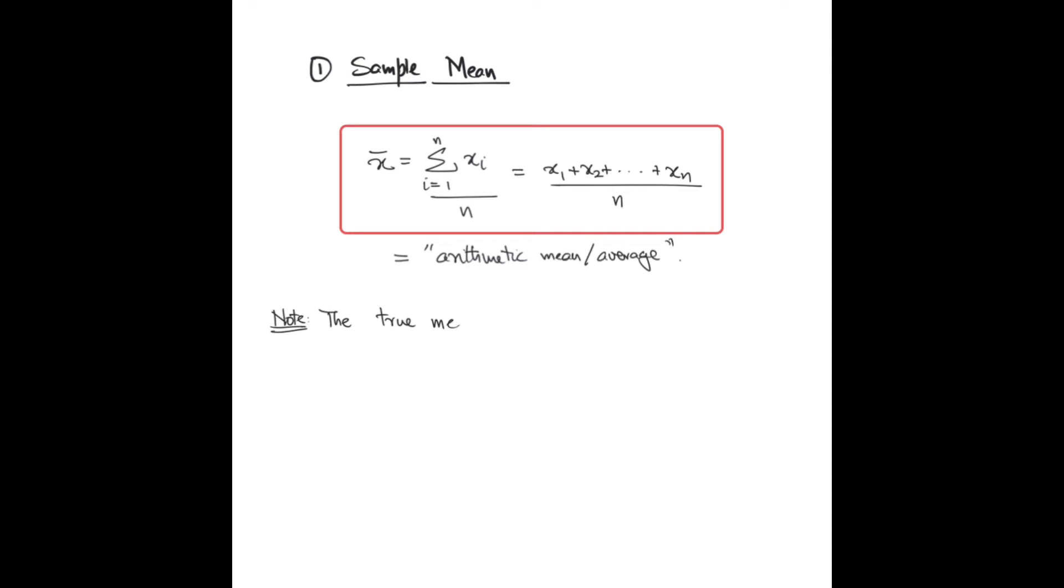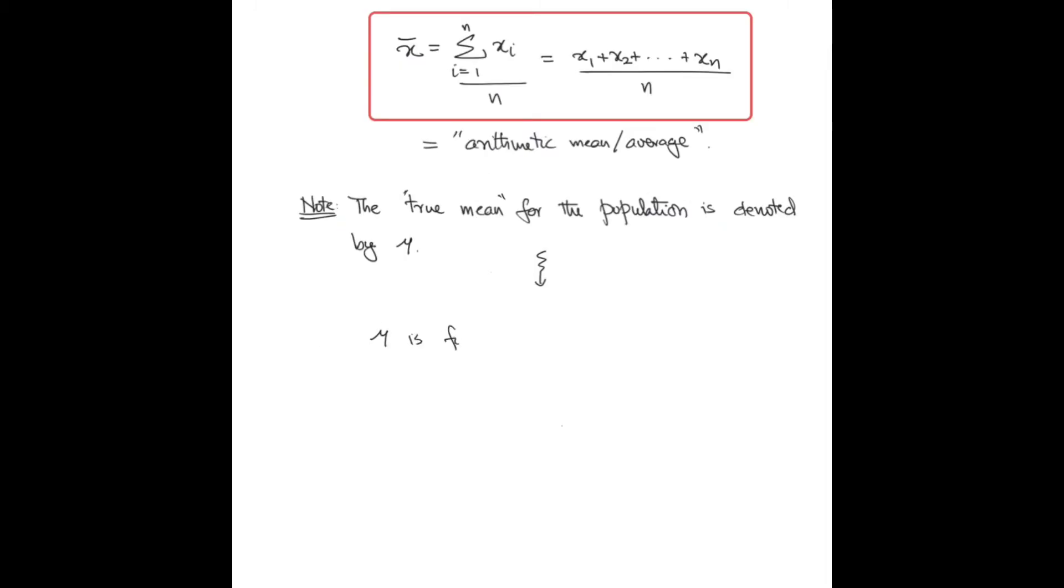It's important to note that the true mean for the population is denoted by mu. To calculate mu, one needs to have a handle on the distribution of the population. Mu is a fixed number and it's usually unknown. We want to use the sample mean to estimate the population mean mu, though this might not always be a good idea.